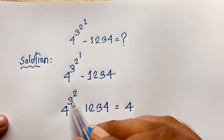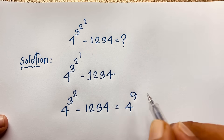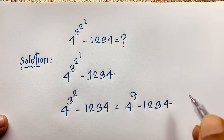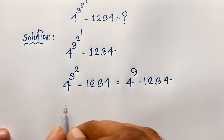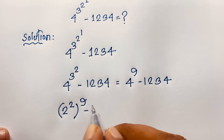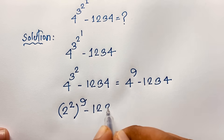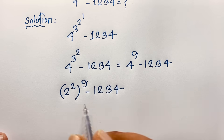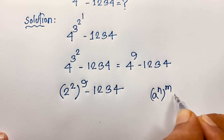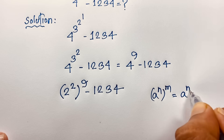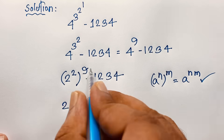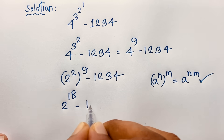Now this expression: 4 to the power, and 3 to the power 2 — it will be 9. So I take here 9, minus 1234. Then 4 — one of that 4 — it will be 2 to the power 2, bracket power 9, minus 1234. We know that the exponential formula: a to the power n, bracket power m, equals a to the power n times m. If I apply this math formula here, it will be 2 to the power 2 times 9, which equals 18, minus 1234.